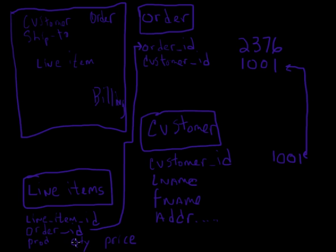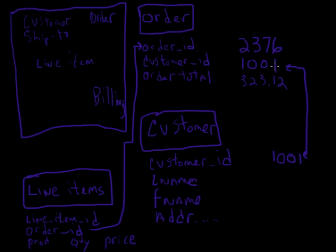For order ID 2376, I'll have product 1, product 2, product 3, product 4. This gives me a lot of flexibility in how I set up my Oracle database. If I store the order total — say $323.12 — and I want to run a query asking how much customer 1001, Ostrowski, spent last month, last quarter, or last year, I just identify Ostrowski as customer ID 1001, then query the order table and sum up all the order totals based on a date range for that user.